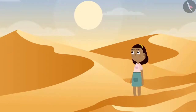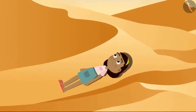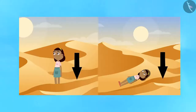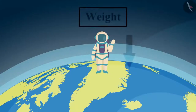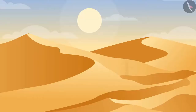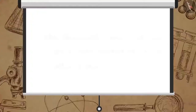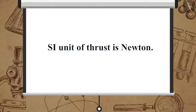Now lie down on the sand and you will notice that your whole body does not go that deep into the sand. In both situations, the force exerted on the sand is your body weight. Weight is the force which acts vertically downwards, so here the force is acting perpendicular to the surface area of the sand.